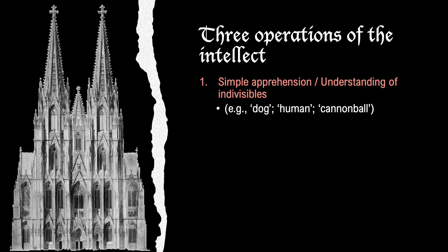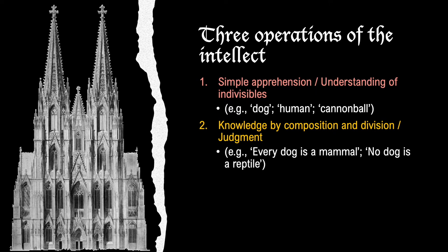The second operation is called knowledge by composition and division, or more simply judgment. In this operation, we either compose concepts from the first operation or divide them. For instance, the sentence 'every dog is a mammal' composes the concept mammal with the concept dog. The sentence 'no dog is a reptile' divides the concept reptile from the concept dog.